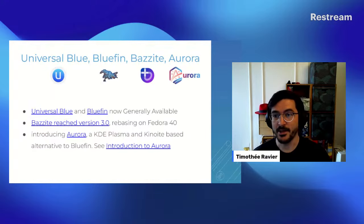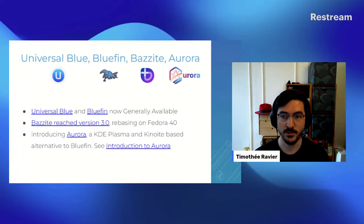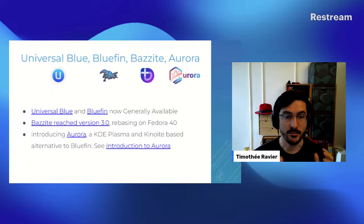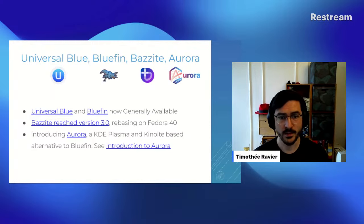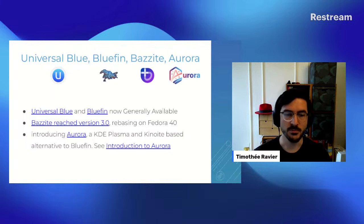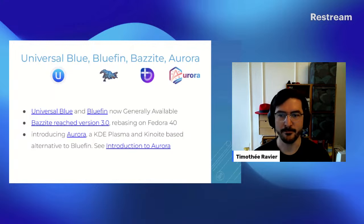I want to give a shout out to our friends in the Universal Blue, Bazzite projects, because they are doing super great work — doing in their projects what cannot be done in Fedora for various reasons, including legal ones. They are building super nice experiences on top of the work we do in Fedora Atomic Desktops. Universal Blue and Bluefin images are generally available, and Bazzite version 2.0 is based on Fedora 40. They also introduced a new variant called Aurora, which is based on Fedora Kinoite.